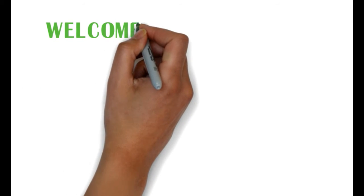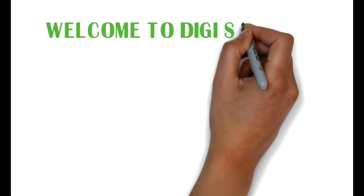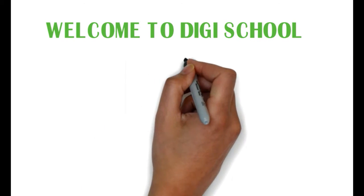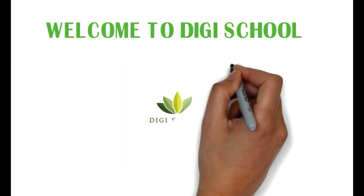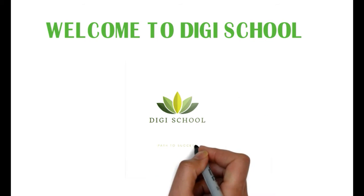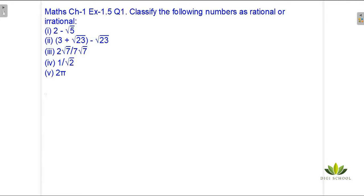Dear student, welcome to DigiSchool. Today we are going to solve Maths Chapter 1, Exercise 1.5. In this question, we have to classify whether the number is rational or irrational number. It has five parts.